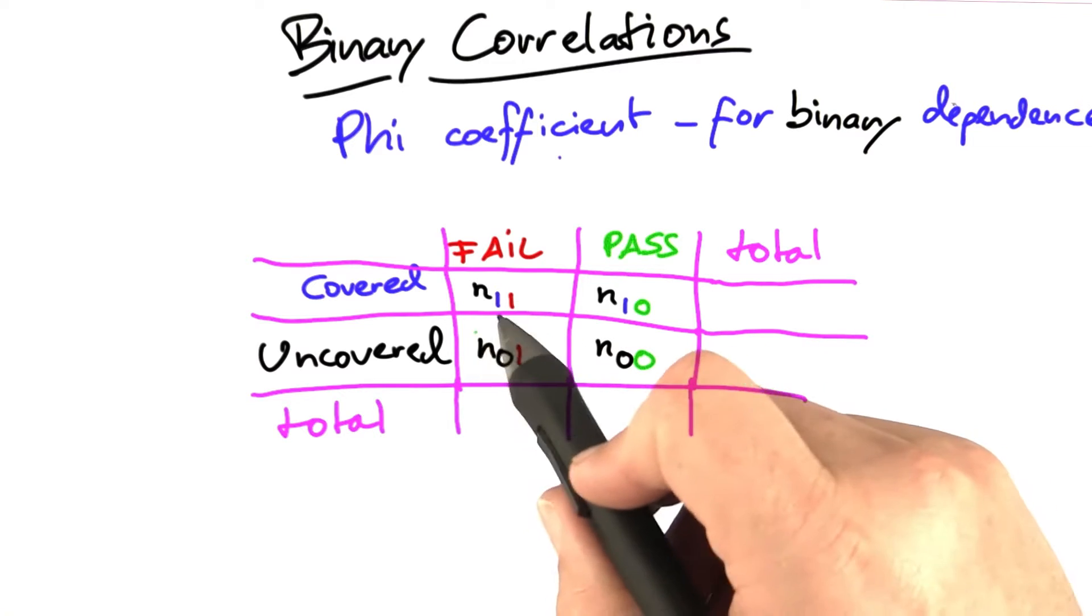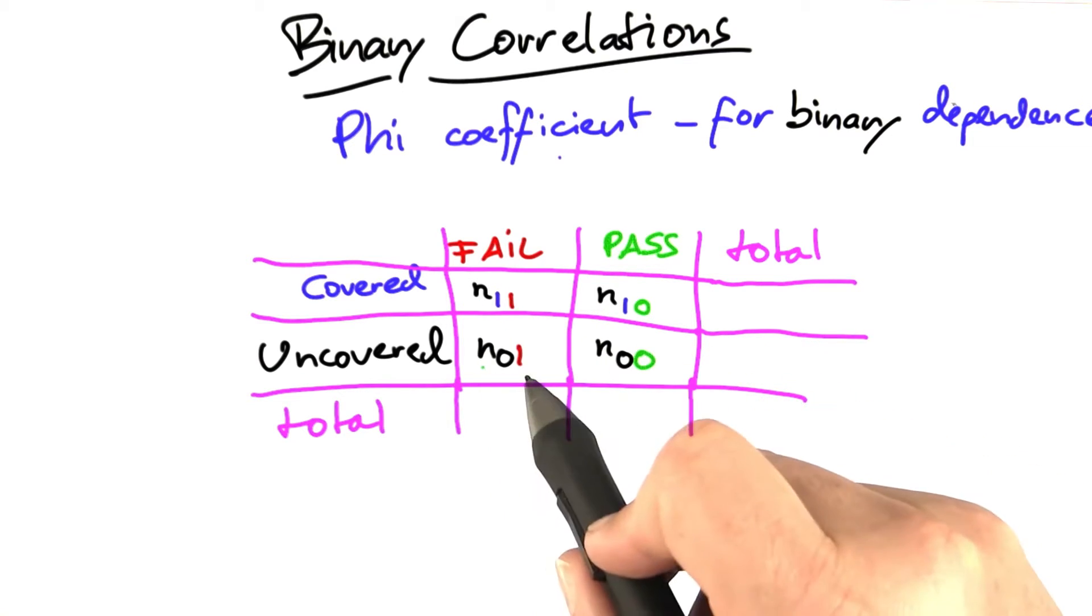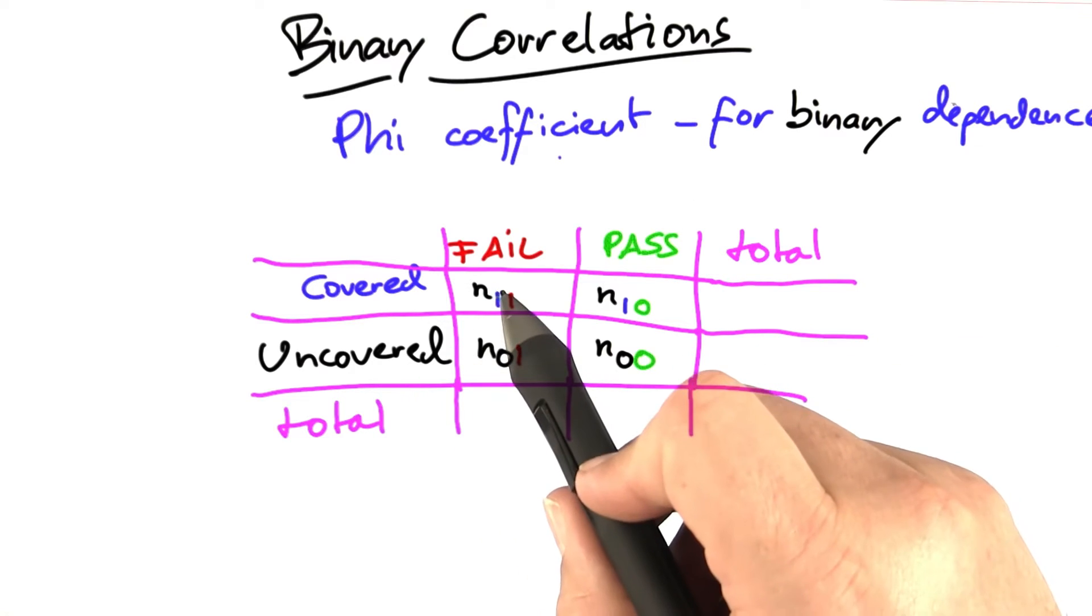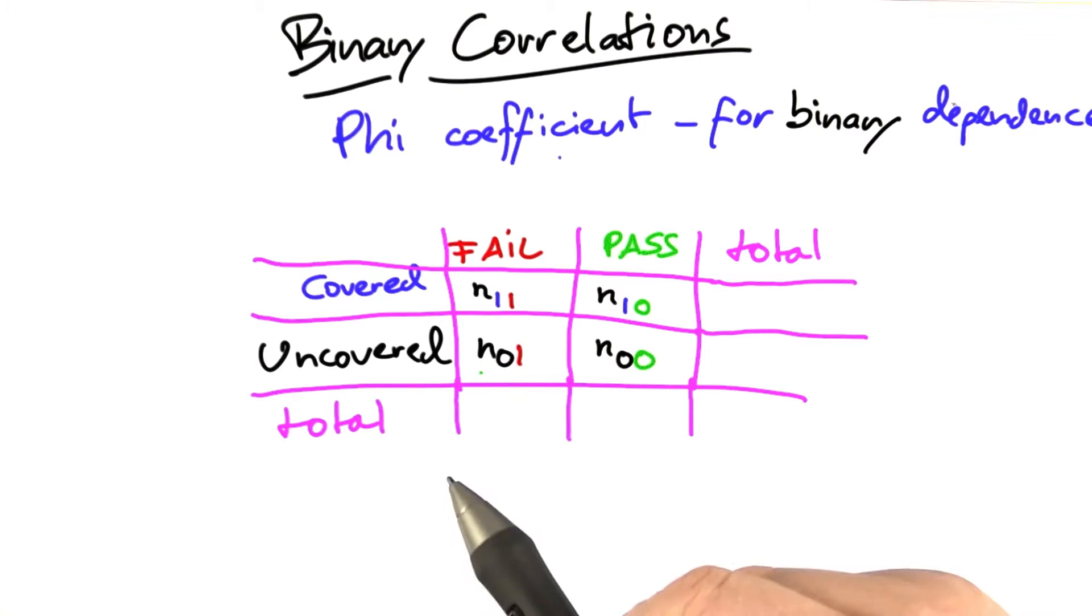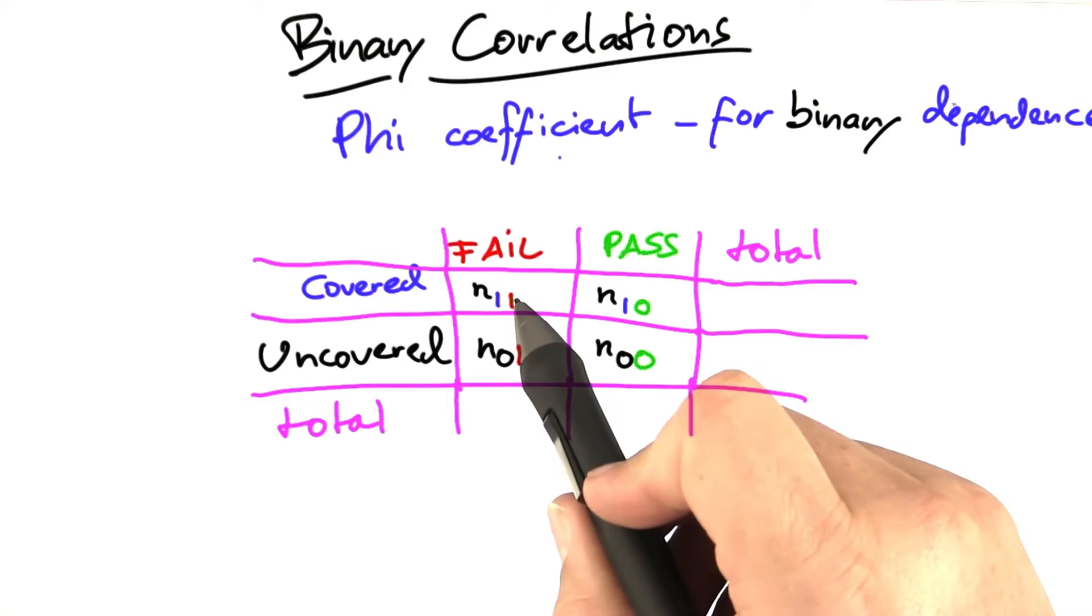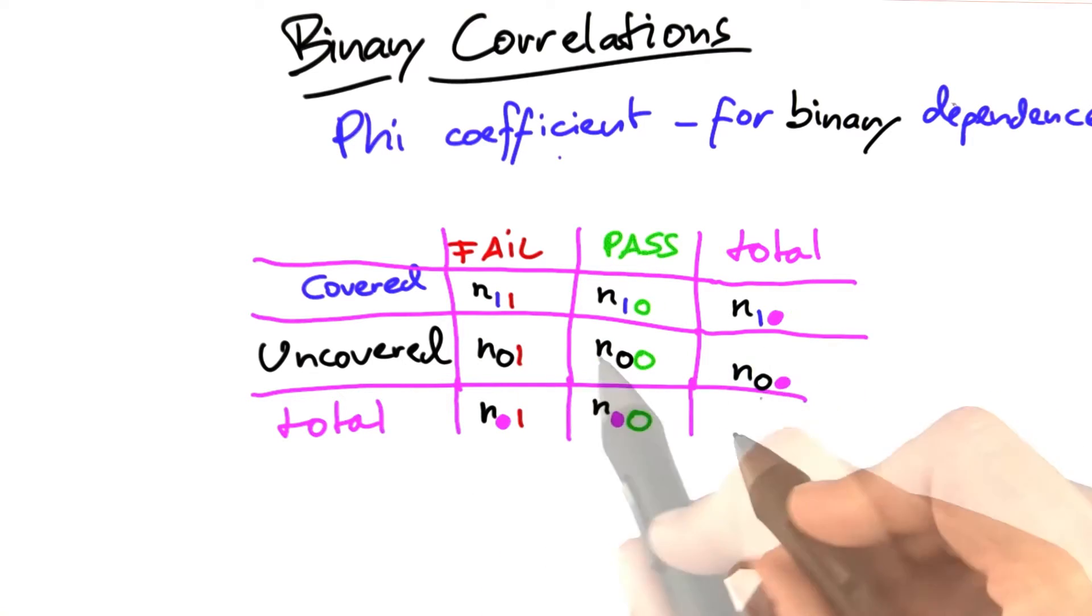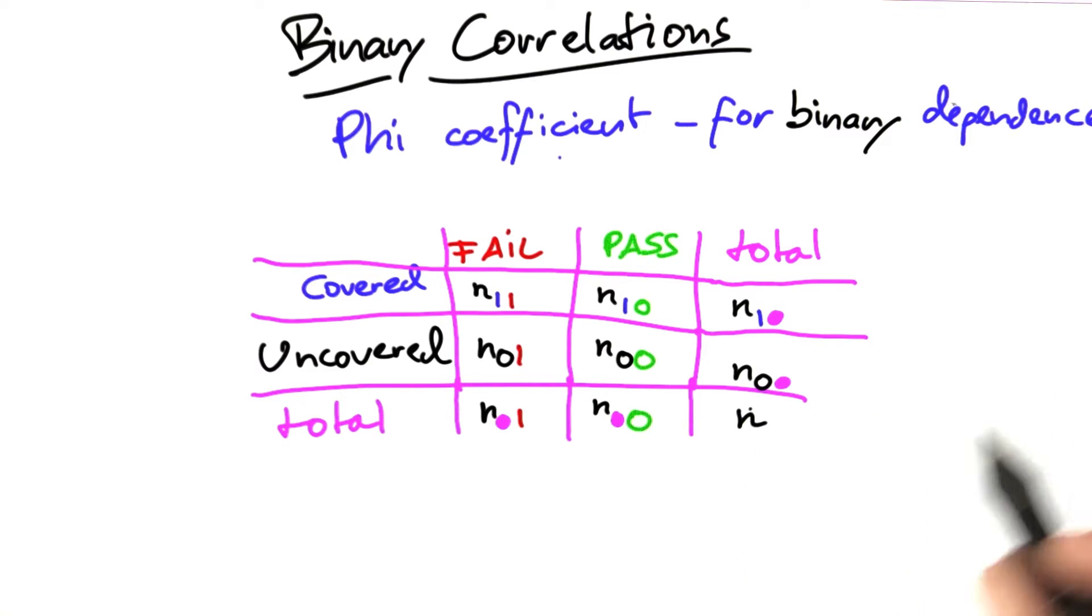These four values take the names N11, N10, N01, N00 respectively, where the first digit stands for covered versus uncovered, and the second digit stands for fail versus pass. You also compute sums over all rows, as well as sums over all columns, as well as the total sum of events.